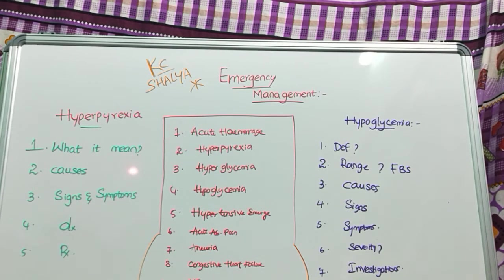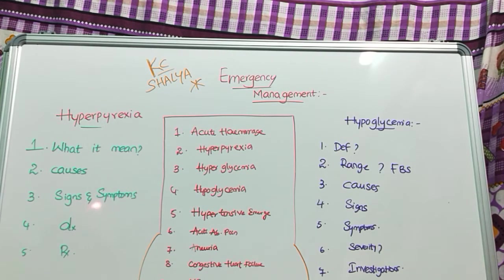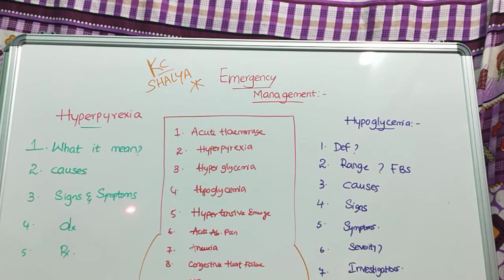The signs and symptoms seen in hyperpyrexia are: nausea, vomiting, headache, dizziness, muscle cramps, dryness, hot skin, confusion, convulsions, alteration in respiratory rate (greater than or less than 18 to 20 times per minute), oliguria (decrease in urinary output), and polydipsia.